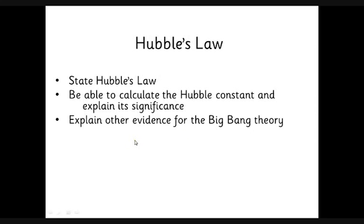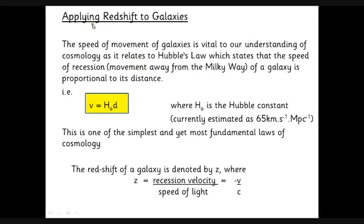If we apply Doppler shift, which we call redshift when looking at light, to galaxies, the speed of movement of galaxies tells us a lot about the universe. Apart from galaxies very close to us like Andromeda, which are governed by gravitational effects, all other galaxies have this amazing relationship: their velocity away from us is proportional to their distance away from us, with the constant of proportionality being the Hubble constant, H or H naught.